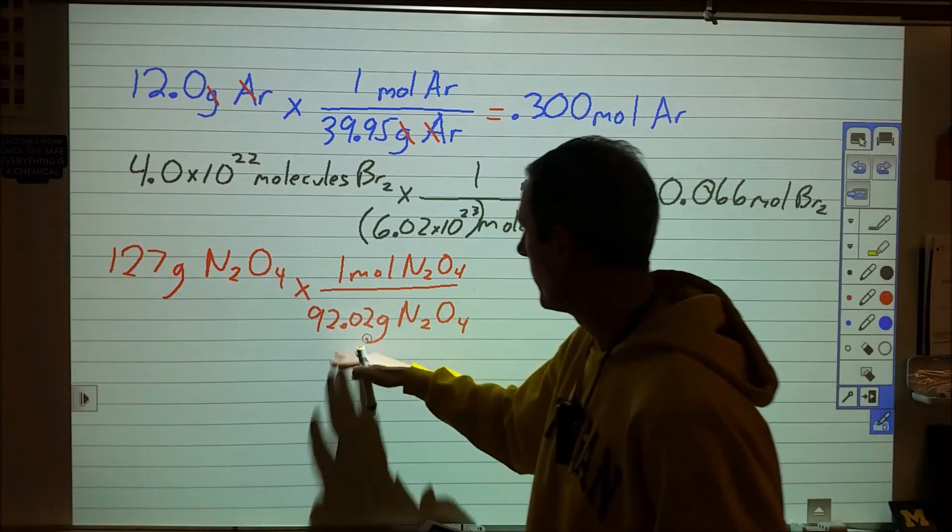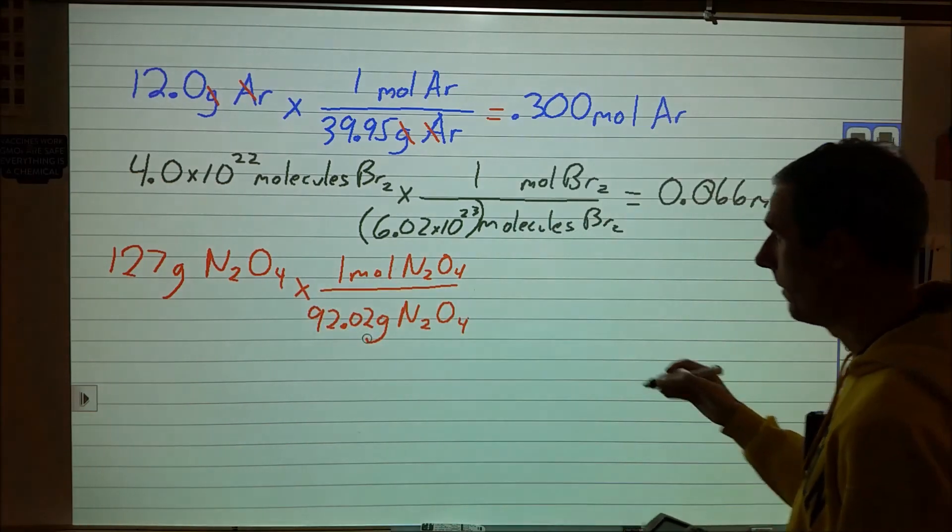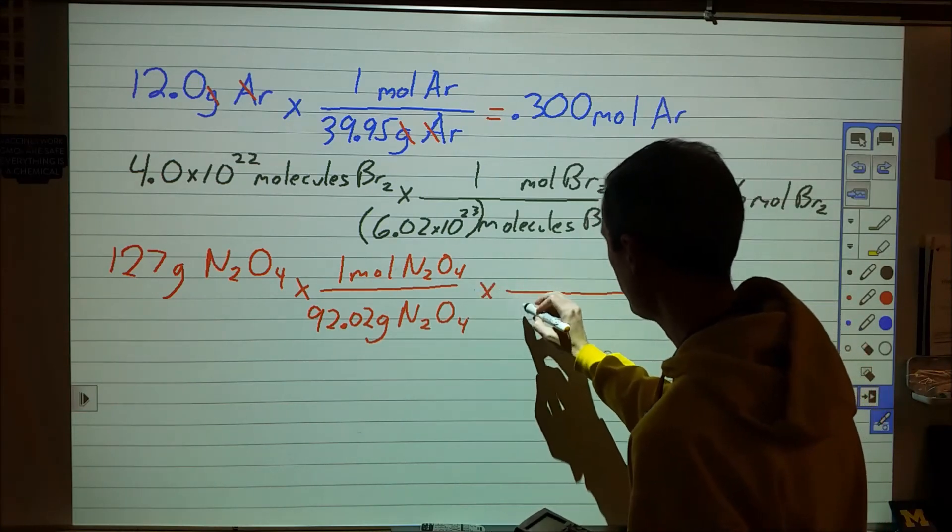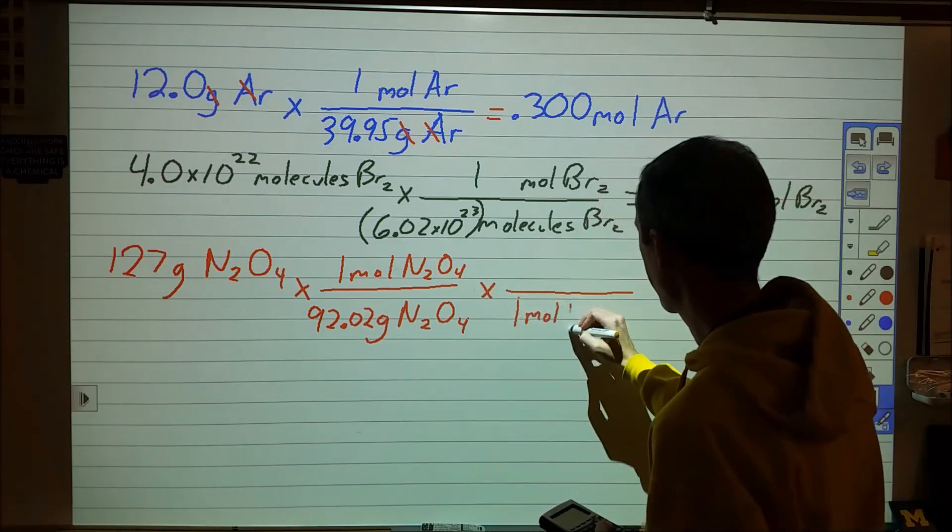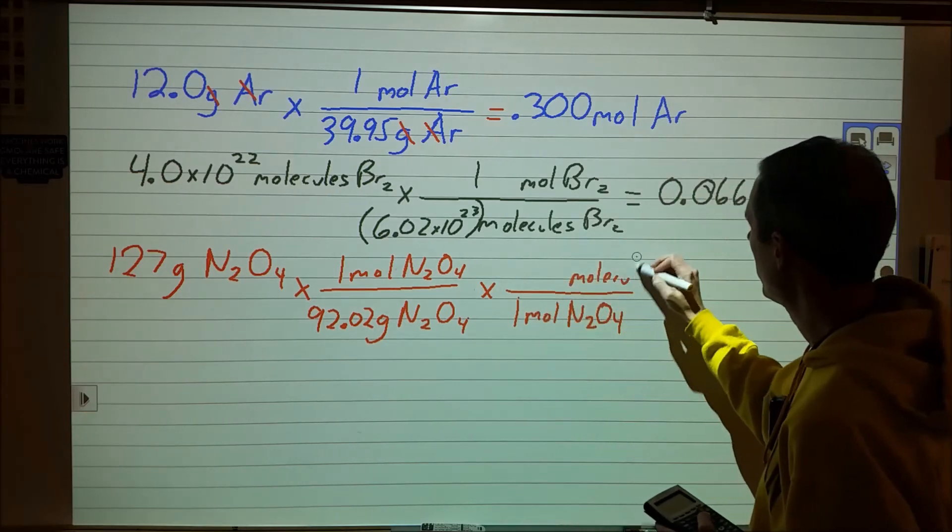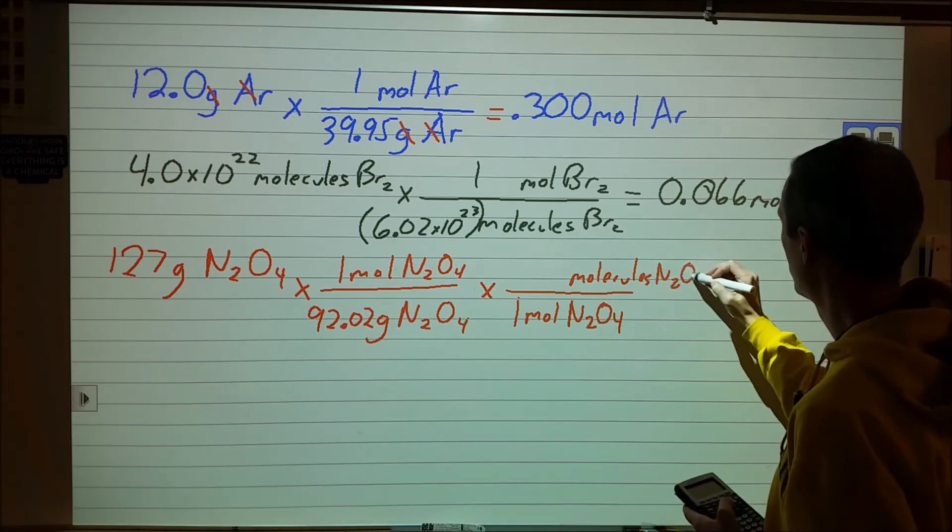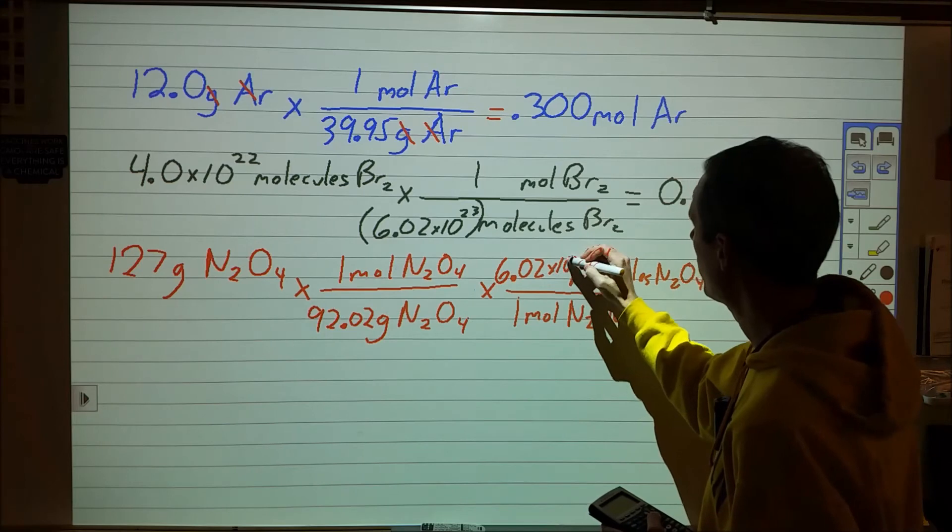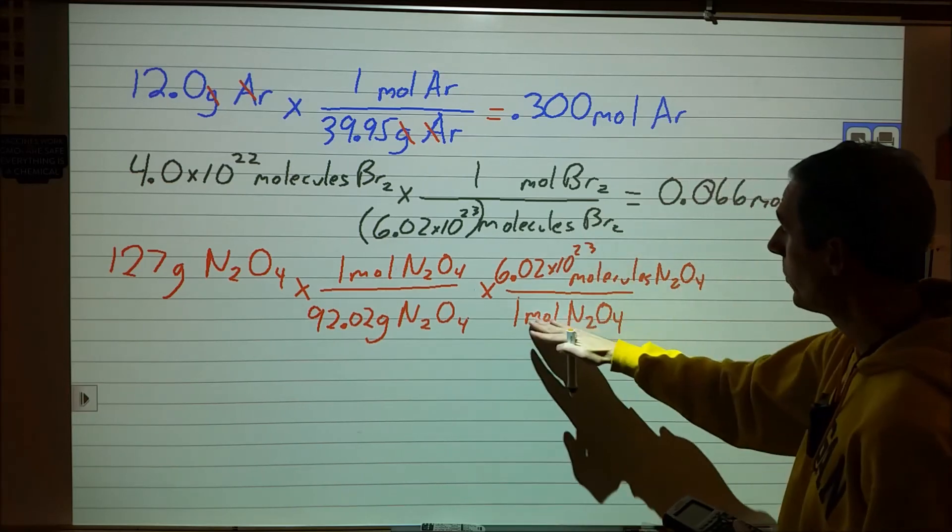So we can fill that in 92.02 grams of N2O4 per one mole of N2O4. So if we take 127 divided by this, that's going to give us the moles of N2O4. And I want to do this one step further. I want to figure out how many molecules there are. And if we're changing to molecules, we would use the fact that there are 6.02 times 10 to the 23rd of anything in one mole of that thing.